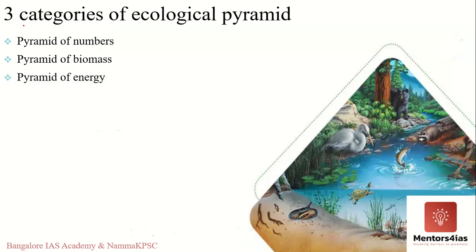Next we look at the three different types of ecological pyramids: the pyramid of numbers, the pyramid of biomass, and the pyramid of energy. We will go through each category starting with the pyramid of numbers.